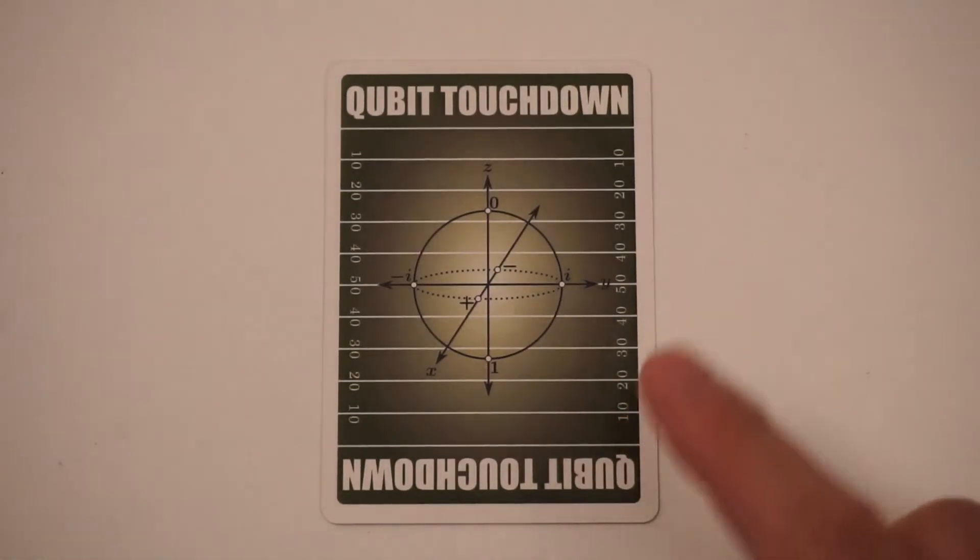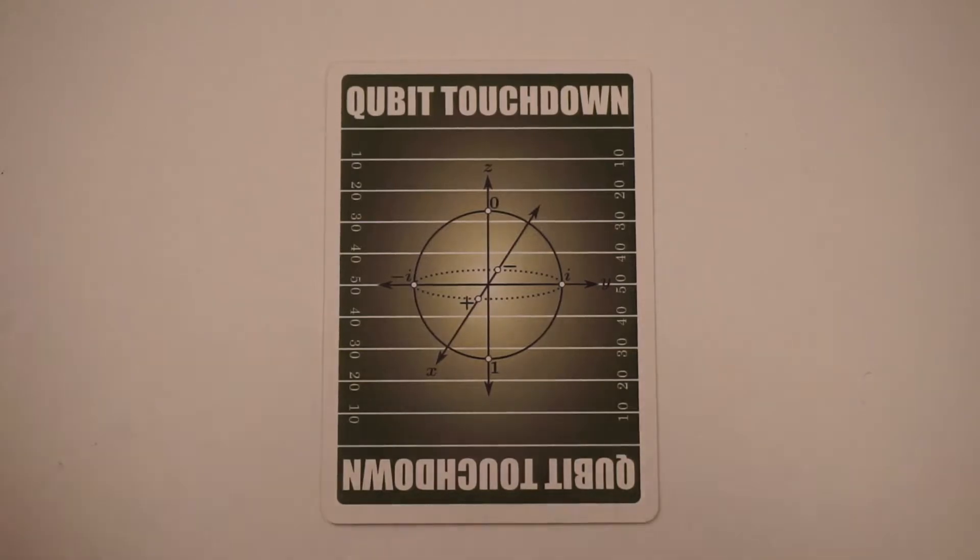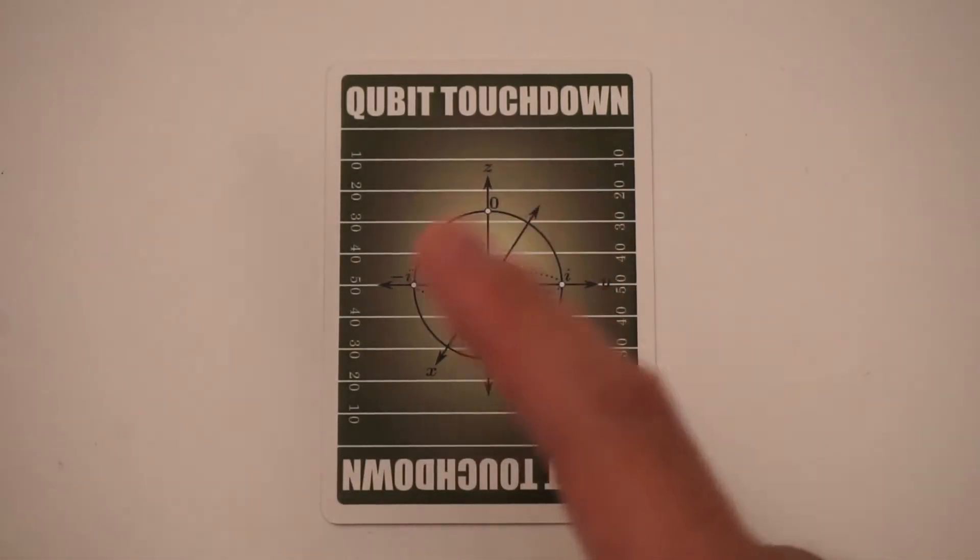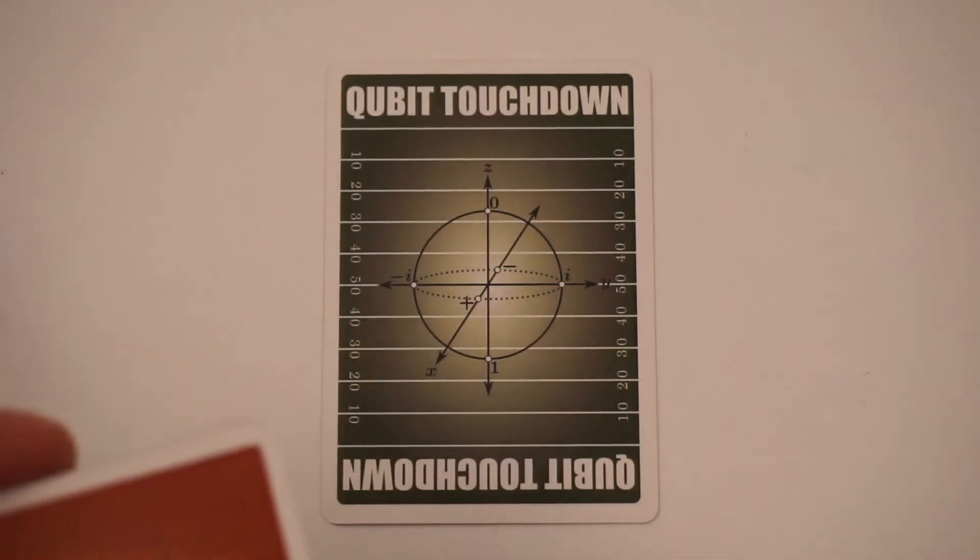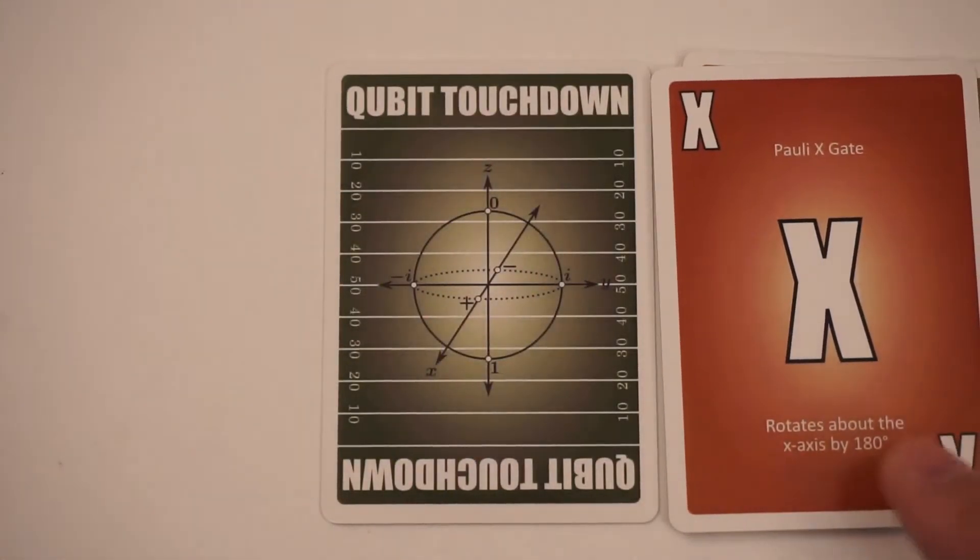So these six points represent six different states of a qubit or a quantum bit. A qubit can actually be any point on the Bloch sphere, but this game uses these six. And so once you've explained this picture, then the explanations of each of these action cards is actually on the card itself.